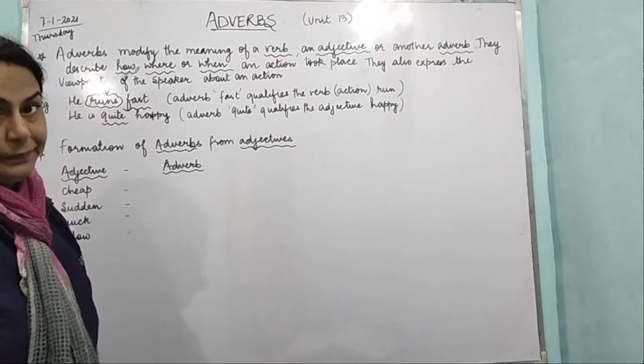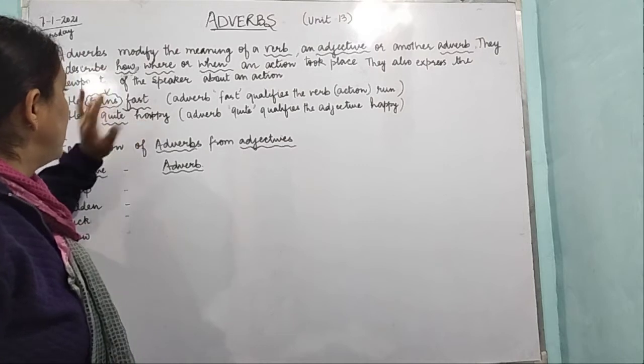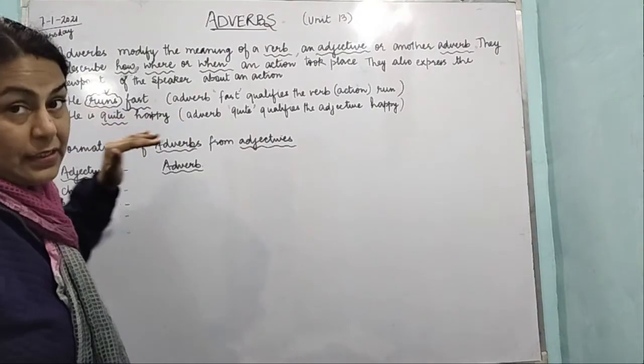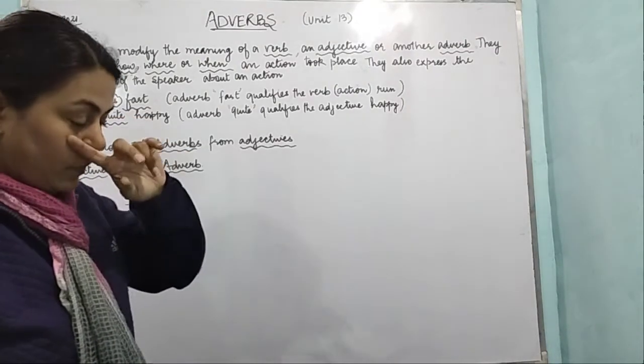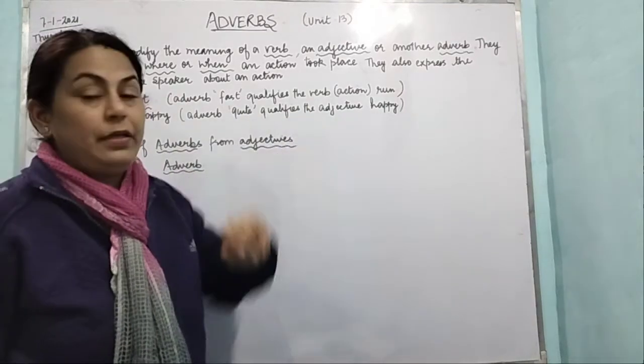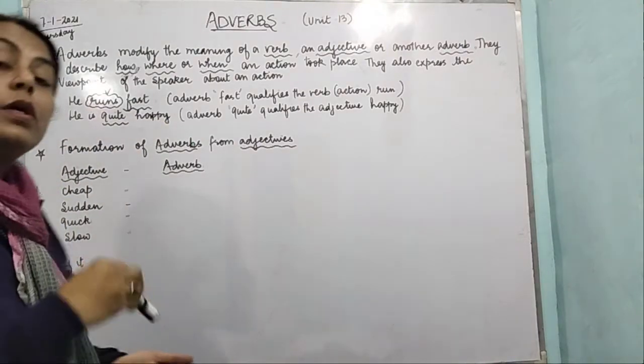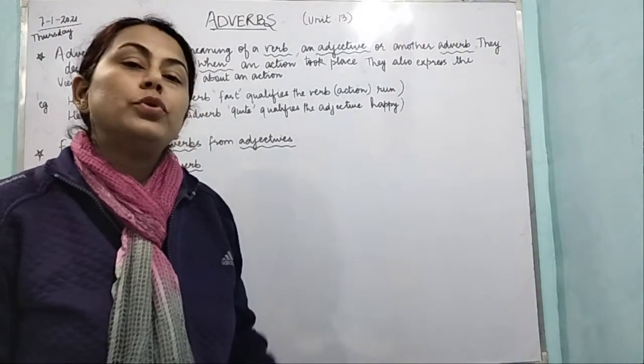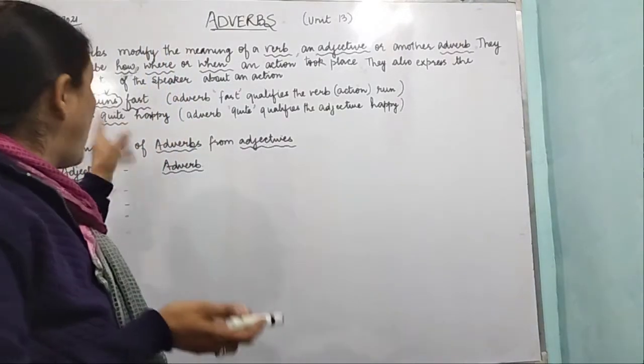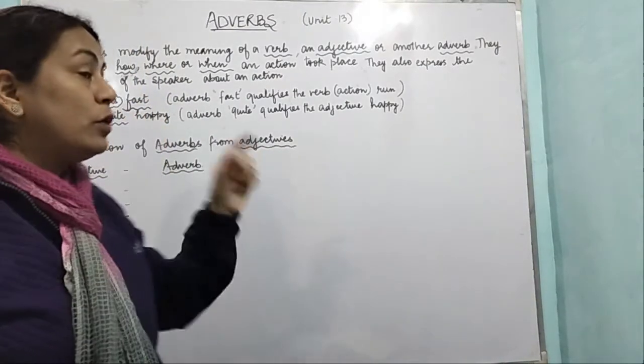He is quite happy. If we just forget about this, if we just think he is happy, what is happy? Happy is an adjective. So here the quite qualifies the adjective happy. He is happy, simple. He is happy. How happy is he? He is quite happy, means very happy. So here quite is modifying the adjective happy.